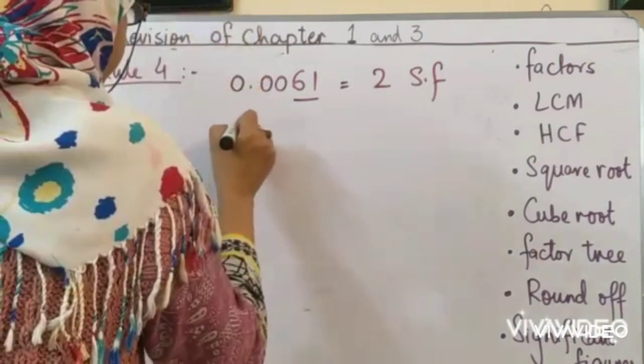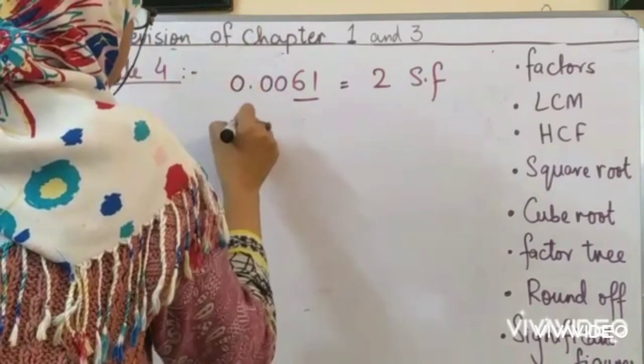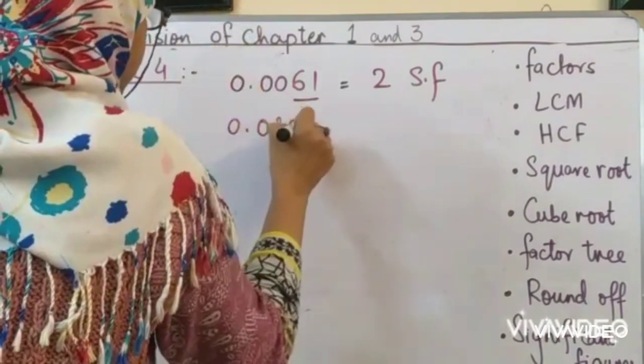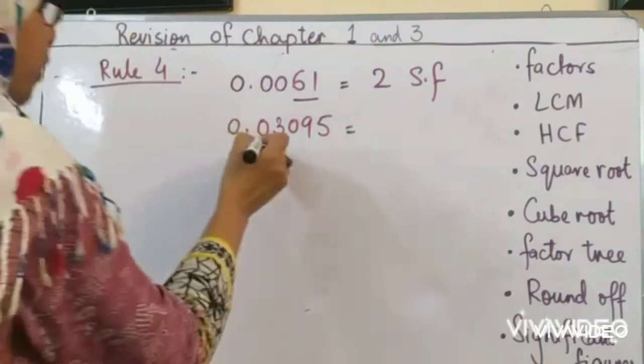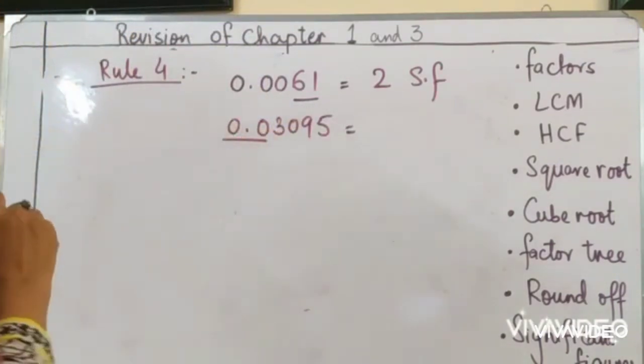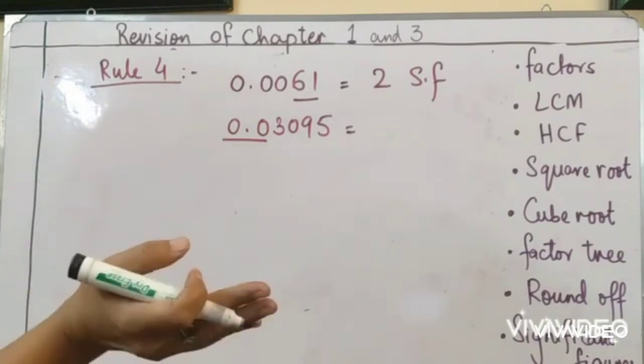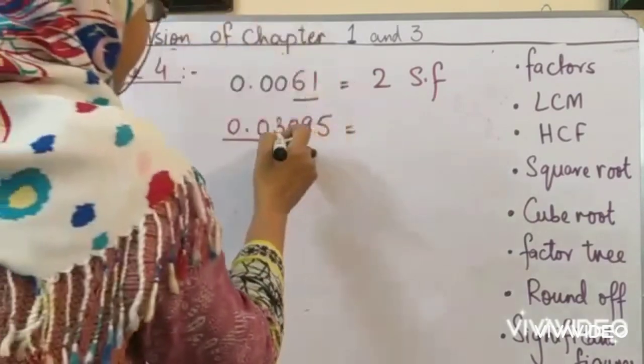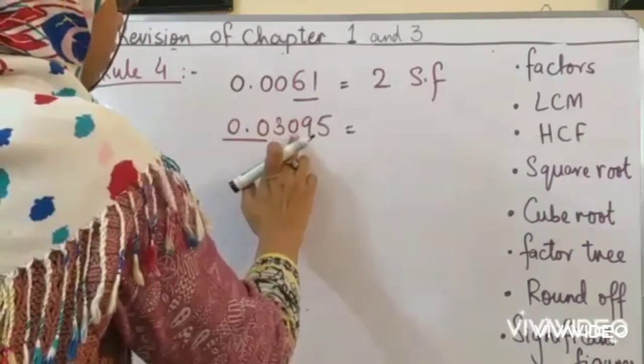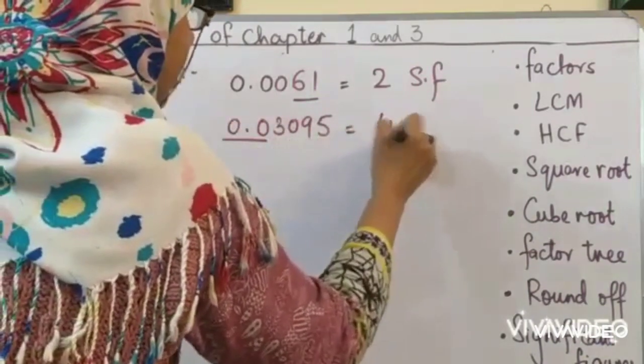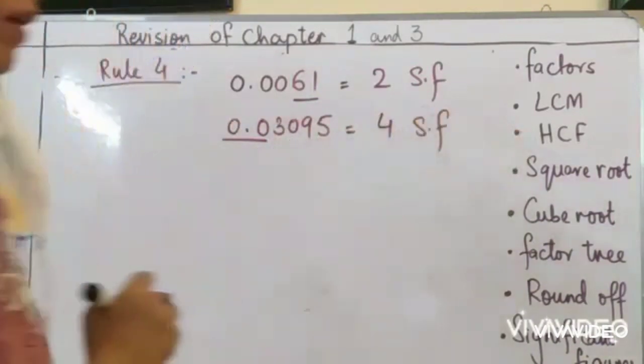Another example. 0.03095. Now, the zeros before the non-zero digit are not significant. But if they are coming between, they are significant. So 1, 2, 3, 4. This number has four significant figures. Clear? Clear?